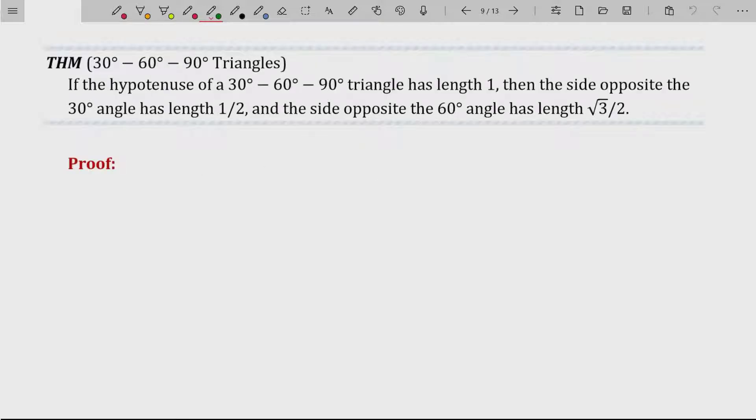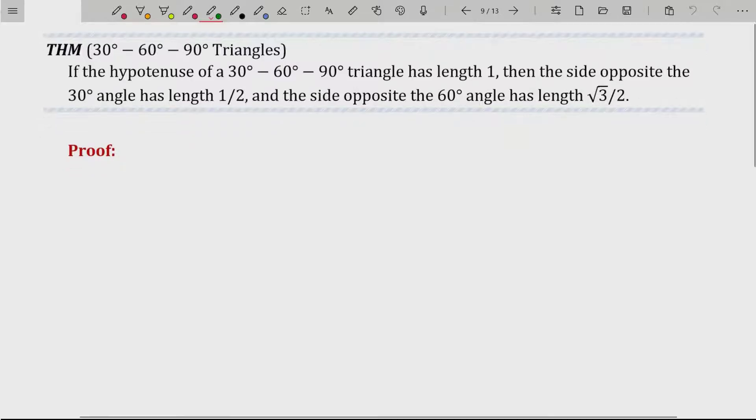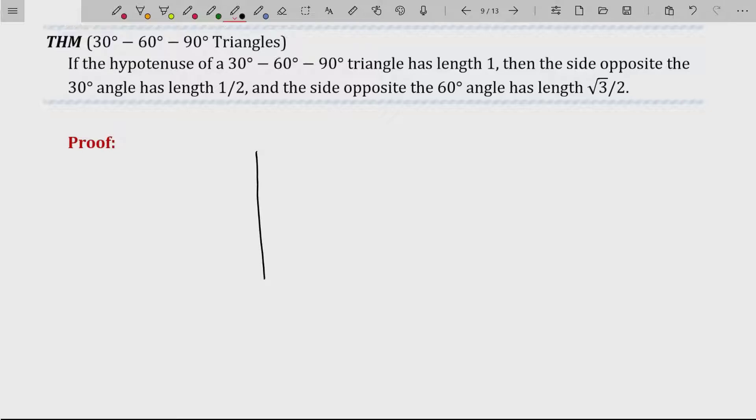This next theorem I think is more important or just as important. If the hypotenuse of a 30-60-90 triangle has length 1, then the side opposite the 30-degree angle has length 1 half and the side opposite the 60-degree angle has length root 3 over 2. Well, this one's not as straightforward to prove. You could draw a 30-60-90 triangle. It'll look something like this, if I can draw appropriately. Here's the 90-degree, here's the 60-degree, and here's the 30-degree. And we're told that the side opposite the 90-degree angle has length 1. That is, the hypotenuse has length 1. Now, there's nothing I can really do here, honestly, the way that it's written.